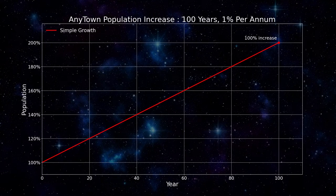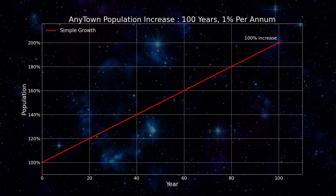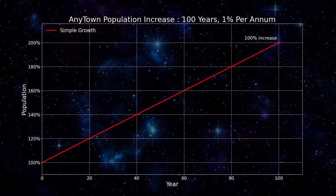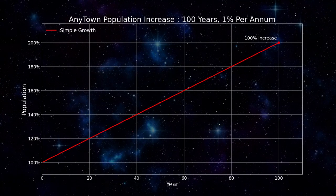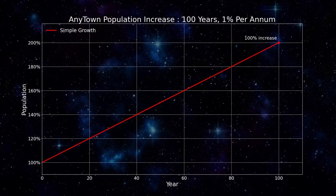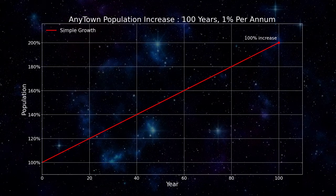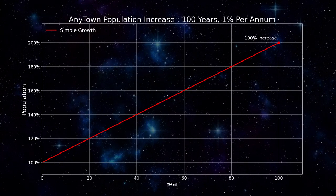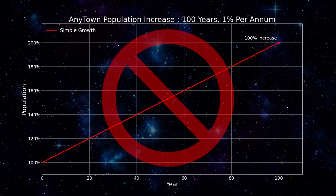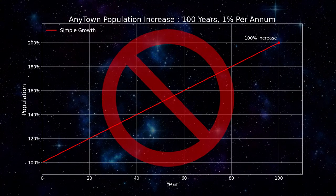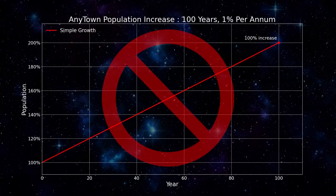Simple algebra tells us that 1% per year times 100 years should double the population. If the population increases 1% per year, in 100 years it should have exactly doubled. Doesn't that sound right? Well, in this case, common sense fails us. That analysis is wrong. It assumes a linear process and overlooks something important.